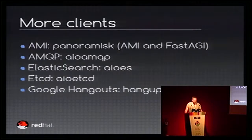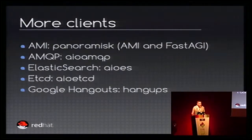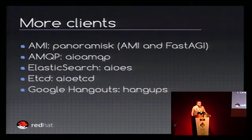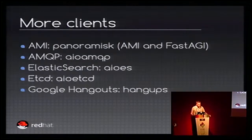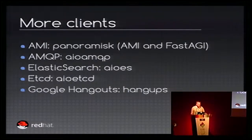We have much more clients for less common protocols — like AMI for Asterisk. You have the Panoramisk project to use on the Asterisk telephony server. You have AMQP, which is a messaging queue protocol with the module aioamqp. For Elasticsearch, you have a client called aioES. You have aio-etcd, and there is even a client for Google Hangouts. I didn't have time to test all these libraries, but I tried to give a long list to show that whatever you want to do with AsyncIO, you have a good choice of libraries.